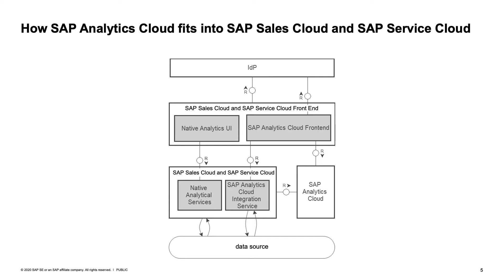Those two services are the native analytics service and the SAP Analytics Cloud integration service. The native analytics service is responsible for giving functionalities for the native analytics interface. When we connect from the SAP Analytics integration service, the native analytics service provides metadata, permissions, and authorization-specific information. The SAP Analytics Cloud integration service is the entry point for the story interface. Whenever a request comes from a story interface, it is processed by this integration service, and through SAML authentication the user is authenticated. The integration service then connects to the analytical service to get metadata, and directly connects to the data source to get relevant data for the currently logged-in user.